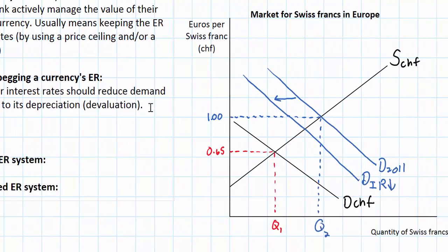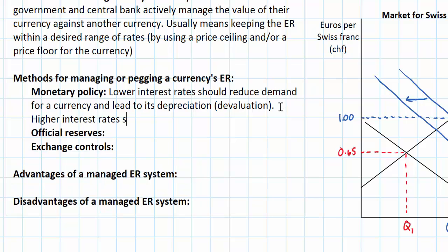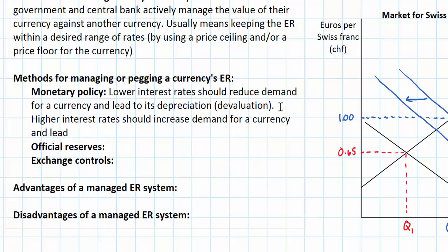What if Switzerland had wished to revalue or appreciate its currency? That's not what the government wanted at the time, but if it were in a situation where it wanted to strengthen the Swiss franc against the euro, it could have raised interest rates. Higher interest rates should increase demand for a currency and lead to its appreciation. The term we use when a central bank actively intervenes to try to appreciate its currency is revaluation. In the case of Switzerland, lower interest rates didn't do enough to bring down the exchange rate.